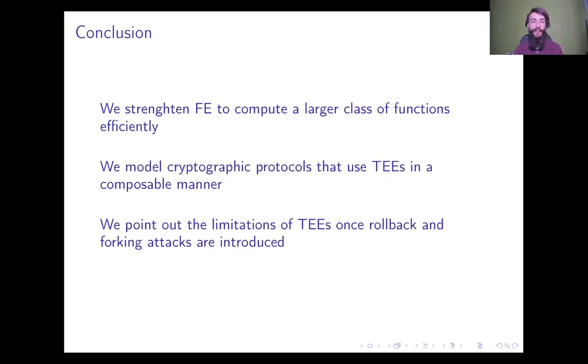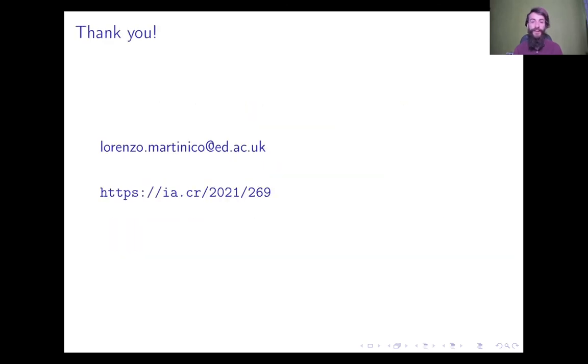In conclusion, our paper tries to answer three main research questions: How to strengthen functional encryption to compute a larger class of functions in an efficient manner. How to best model cryptographic protocols that use trusted execution environments composably. And what are the limitations of trusted execution environments if we introduce rollback and forking attacks? Thank you for listening. You can contact me at this email and the full print paper is available at the link below.